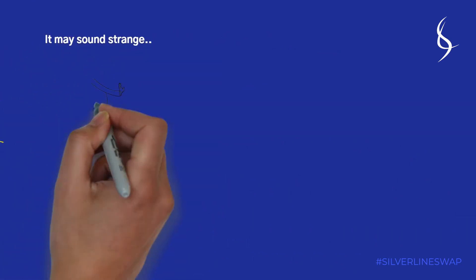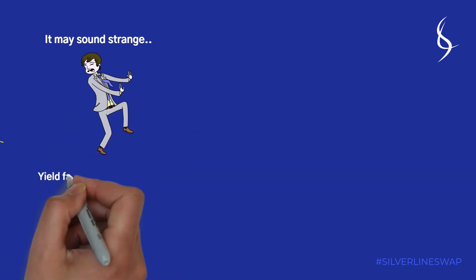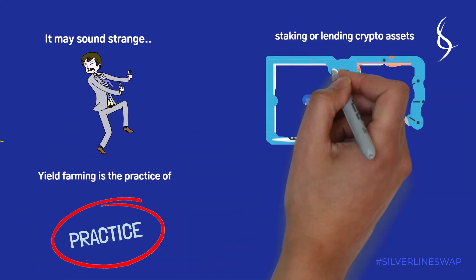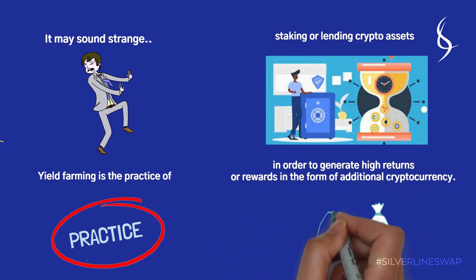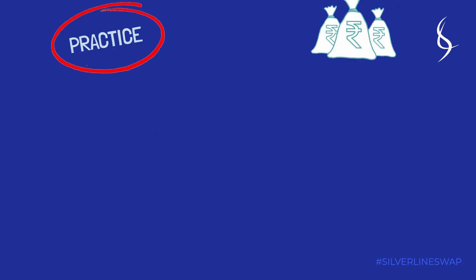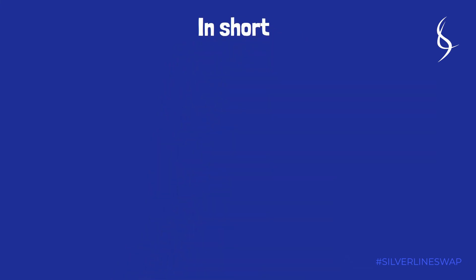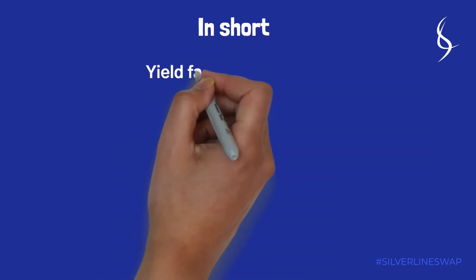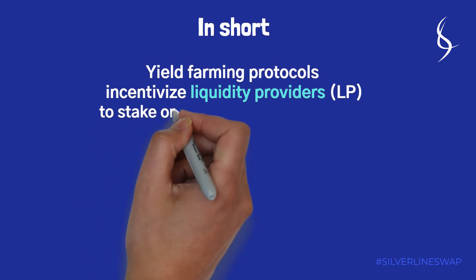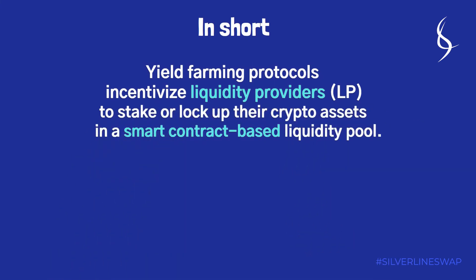Yield farming is the practice of staking or lending crypto assets in order to generate high returns or rewards in the form of additional cryptocurrency. Yield farming protocols incentivize liquidity providers to stake or lock up their crypto assets in a smart contract-based liquidity pool.